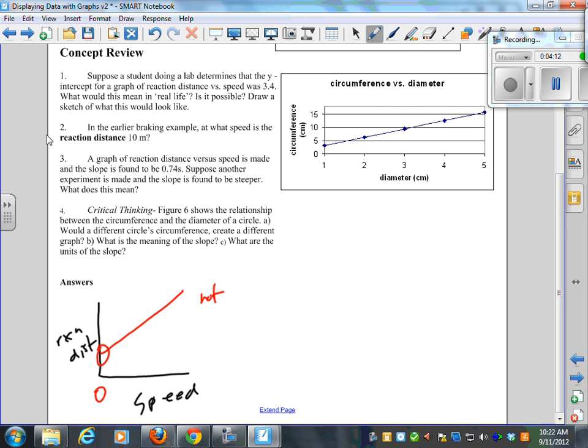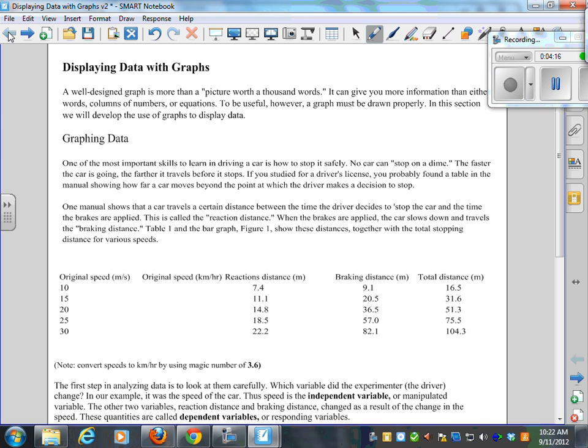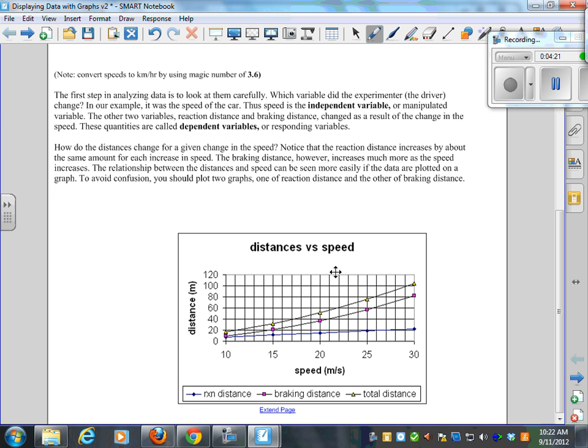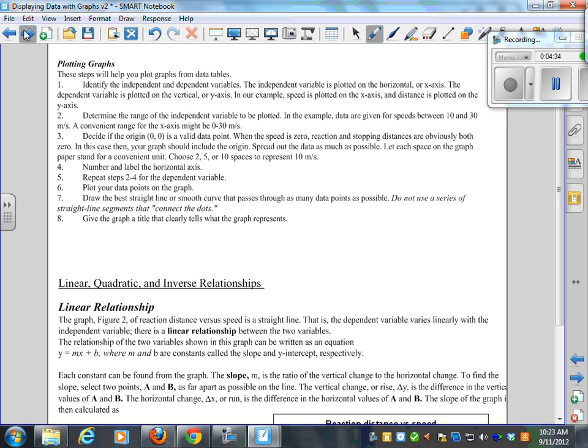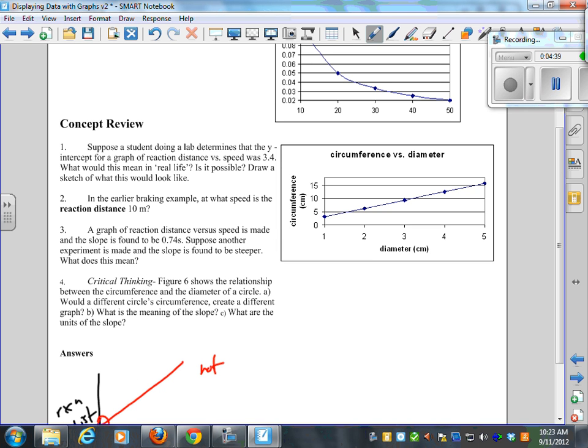In the earlier breaking example, what speed is the reaction distance 10 meters? You have to go way back to here. Reaction distance was 10 meters. So you've got to figure out where 10 is going to be, and I think we all agreed it's around there. About 14 meters per second. Is that what we agreed on yesterday? So 14. So number 2 was 14 meters per second. And I think that's where I left off.